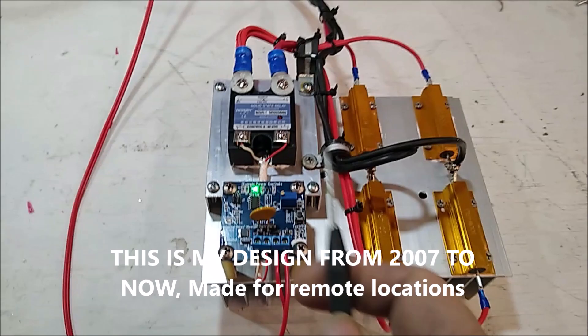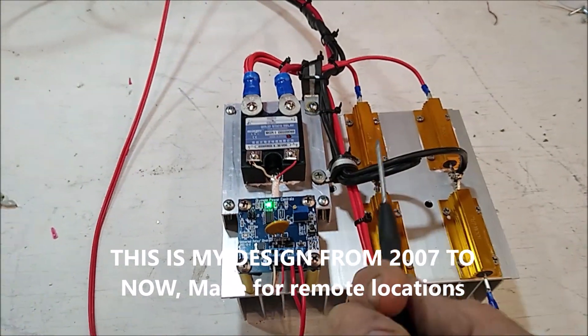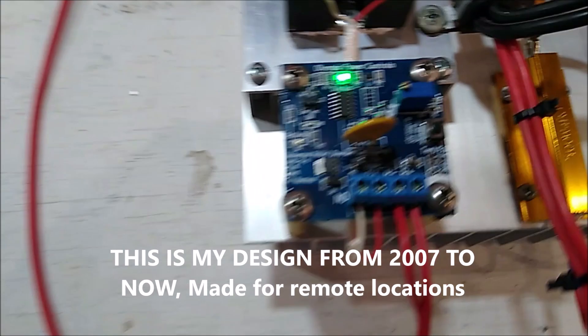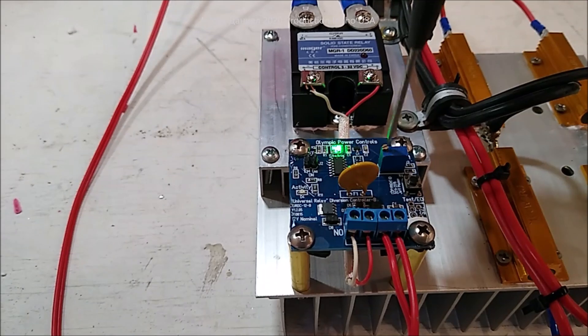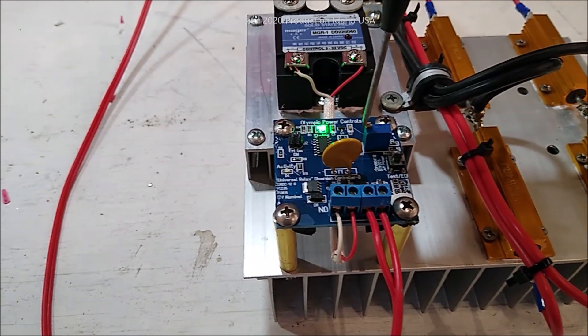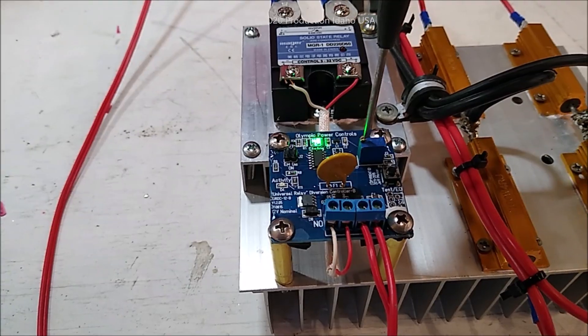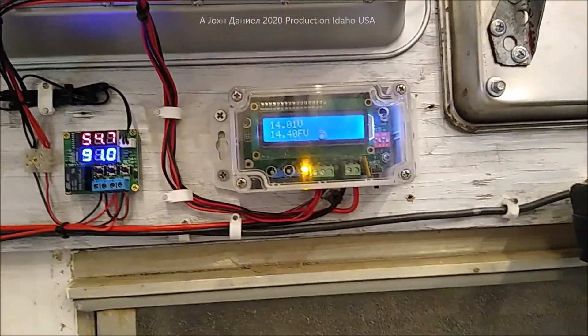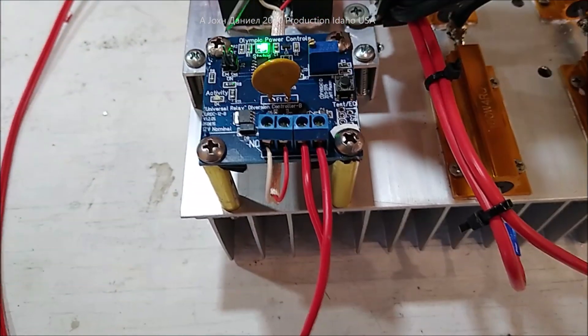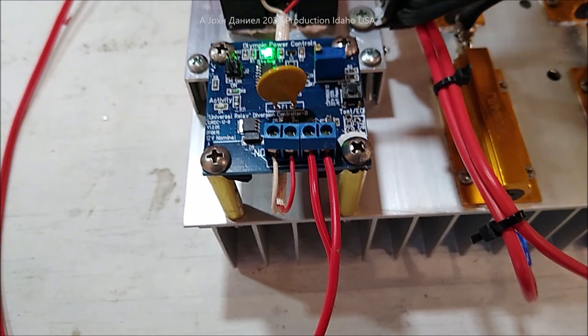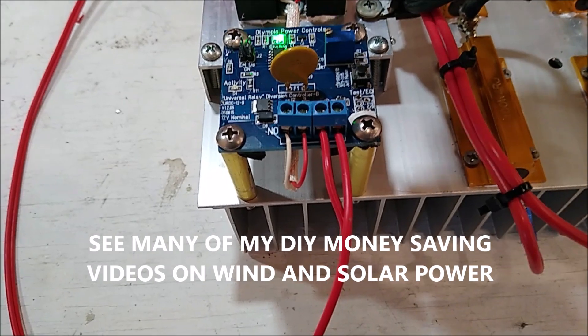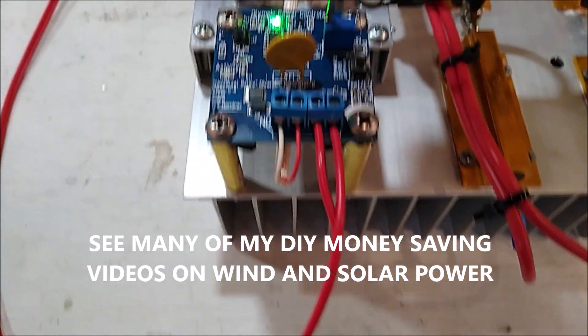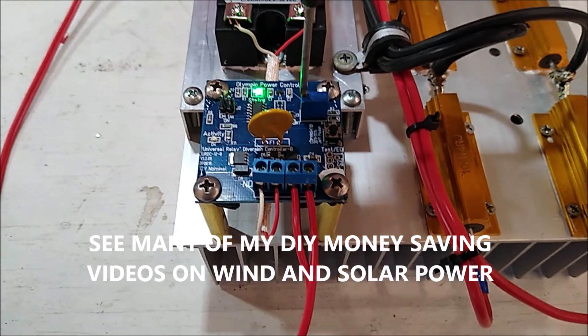This is a charge controller for a wind turbine, a diversion controller. As you'll see right here, this is an OPC, Olympic Power Controls Universal. I'm going to put a link down there to those through Mason. They're really simple. Now this one we're going to use SSR, so we have that tab removed. This one here, I will turn it out to raise the voltage.